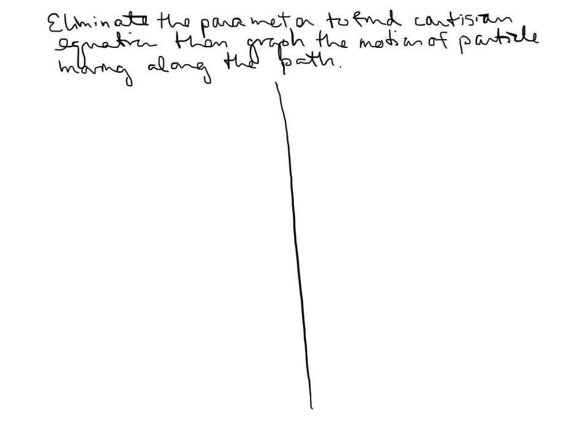You're probably wondering what a Cartesian equation is. A Cartesian equation means write the equation y equals some function of x. So we're going to have parametric equations in terms of a variable and we want to switch it to be some equation y equals in terms of a function of x.